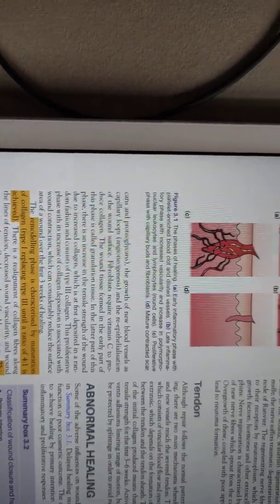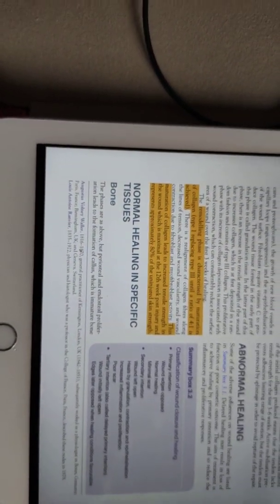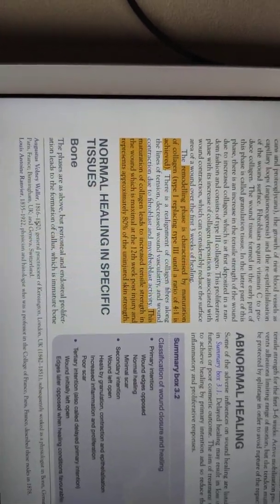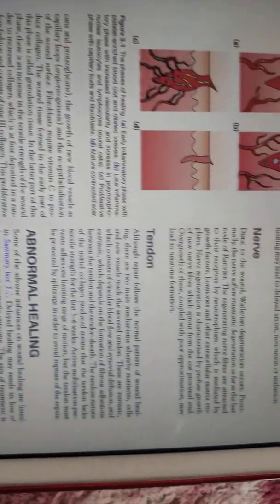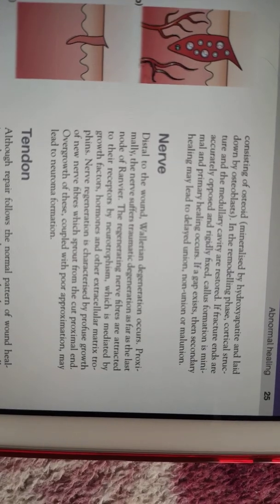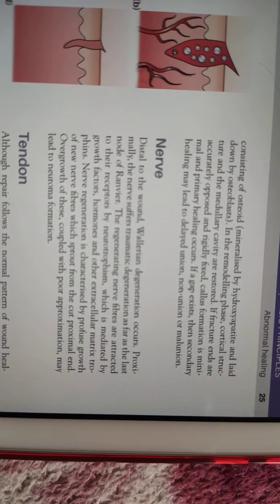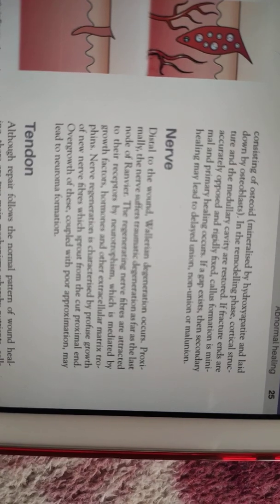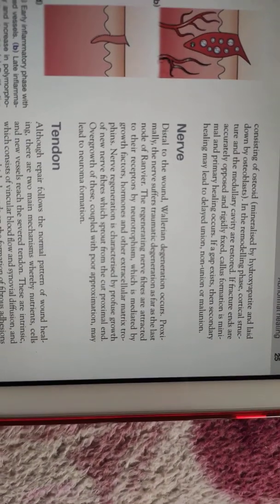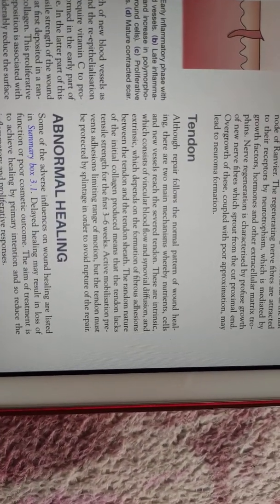In specific tissues, healing also occurs similarly. In bone, it occurs through the formation of callus. In nerves, distal to injury there is Wallerian degeneration, and proximal there is traumatic degeneration up to the level of the node of Ranvier. Then through various neurotrophic hormones and neurotrophins, the nerve regrows.